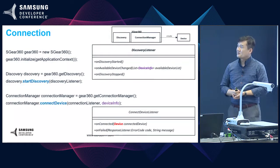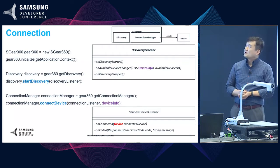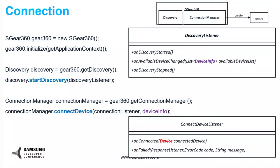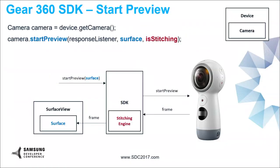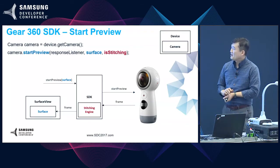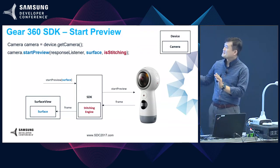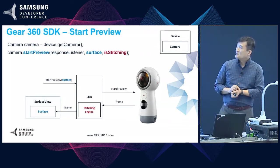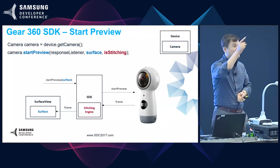This is a brief sample code for connection. To work with Gear 360, you have to start with discovery and connection. This shows how to connect with the Gear 360. And this part is a very important function of Gear 360 — Preview. To make a preview, we have to stitch the front and rear images to make one image. If you want to learn more, please visit our code lab site. You can get some coding experience and have some fun.